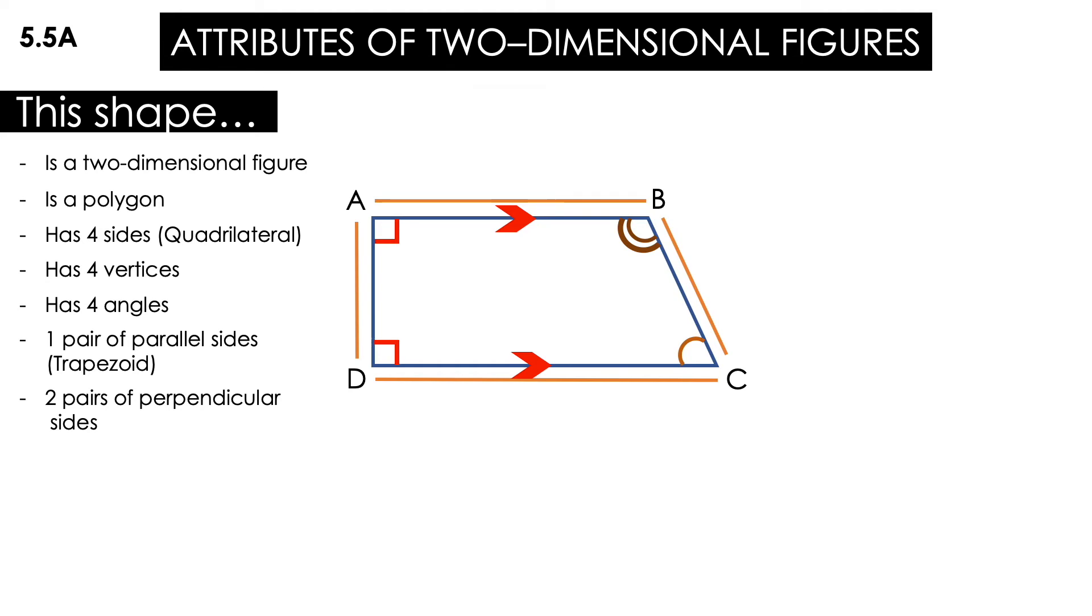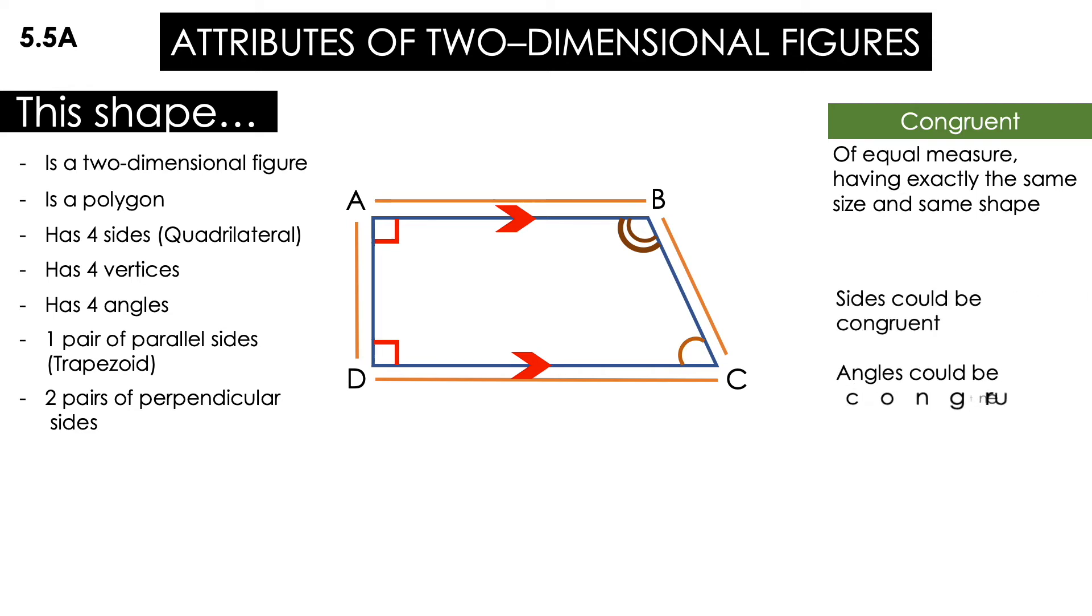Now, let's talk about the next one. Congruent, of equal measure, having exactly the same size and same shape. Sides could be congruent and also angles could be congruent. Answer a question for me, please. Do we have any sides congruent here that they look the same shape or the same size? No, we don't. But, we do have congruent angles. A and D, they look pretty much the same because they are the same. They are right angles, both of them. That means that angle A is congruent with angle D. Two angles are congruent.